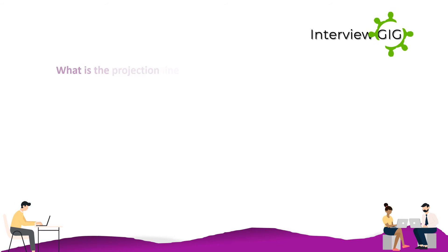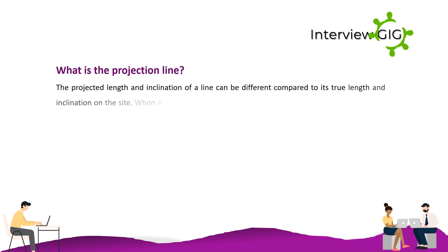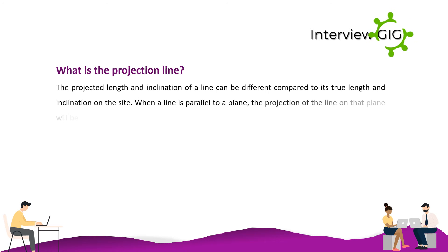What is the projection line? The projected length and inclination of a line can be different compared to its true length and inclination on the site. When a line is parallel to a plane, the projection of the line on that plane will show its true length.